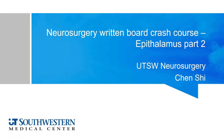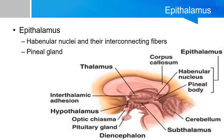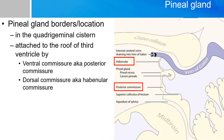Hello everyone. Welcome to the neurosurgery written board crash course. My name is Chen. Today we'll talk about part two of the epithalamus. As we talked about in part one, the epithalamus is mostly composed of two parts: the habenular nucleus, which is a little bit anterior, superior, and lateral to the pineal gland. The focus of this video is all about the pineal gland.